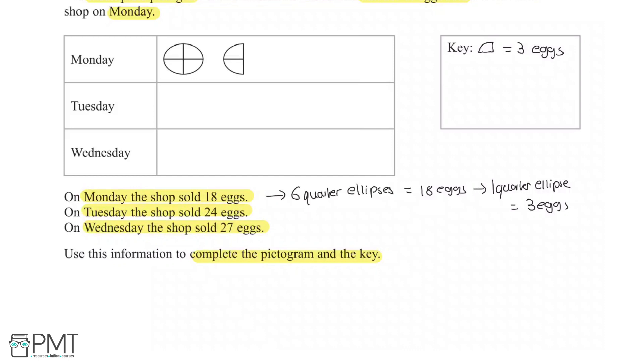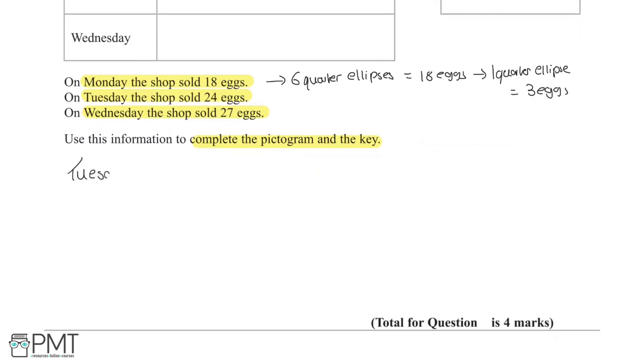On Tuesday the shop sold 24 eggs. So what we're going to say is that the number of ellipses on Tuesday—we know that 1 quarter ellipse is going to be 3 eggs, and so 24 eggs. First we need to work out what we multiply by 3 to get 24, and the way we find this is by doing 24 over 3, which equals 8, so therefore we will be times them by 8. So we're going to multiply this side by 8 as well. So we have 8 quarter ellipses for 24 eggs.